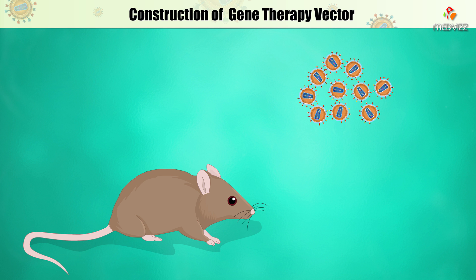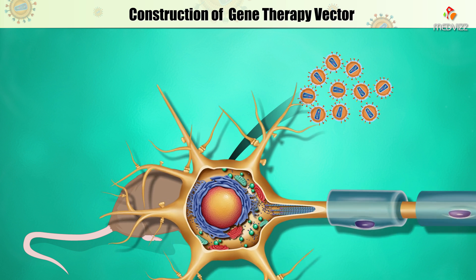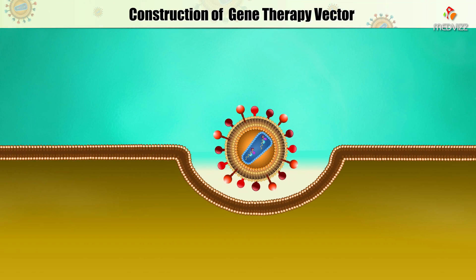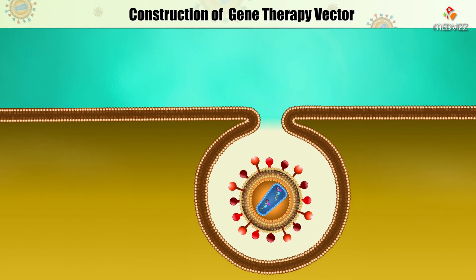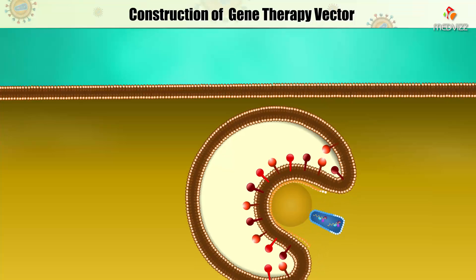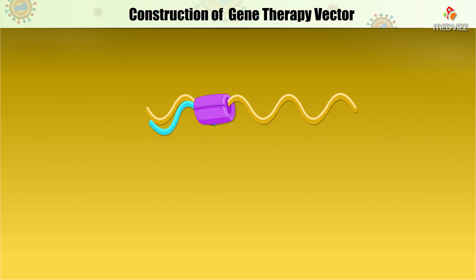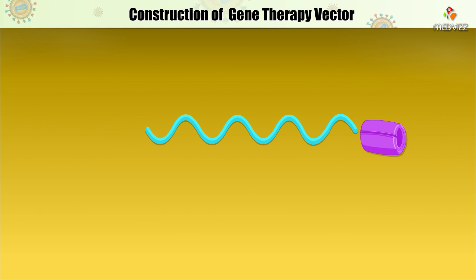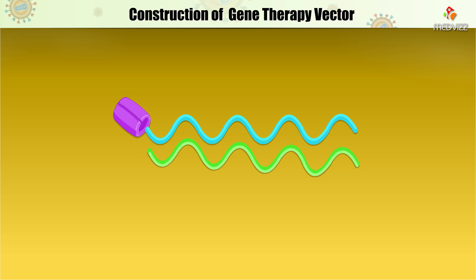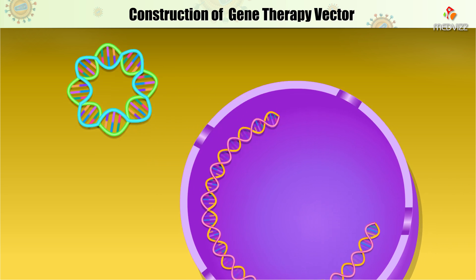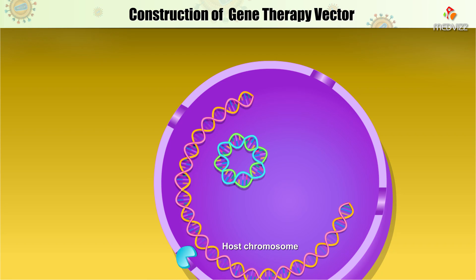In one experiment, the virions were injected into the brains of rats to analyze the expression of the gene of interest — in this case, the gene for green fluorescent protein. The virion would be expected to enter the brain cells, and once inside, the vector RNA would be converted into DNA by reverse transcriptase. The new DNA would then enter the nucleus, where it would integrate into the host DNA.